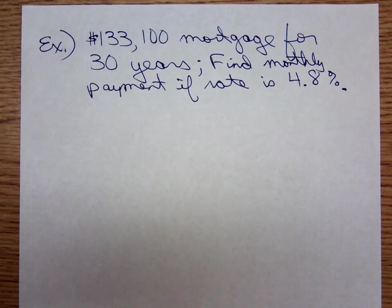Here's an example. Suppose we're getting a mortgage, a 30-year mortgage for our house. We're going to borrow $133,100 and the interest rate is 4.8% fixed for those 30 years. We want to find our monthly payment.